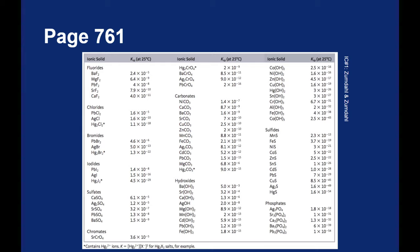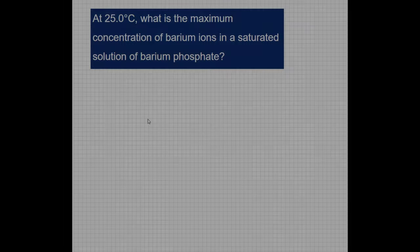Barium phosphate has a really low Ksp value. It has a Ksp of 6 times 10 to the negative 39. So that's become the pattern here.